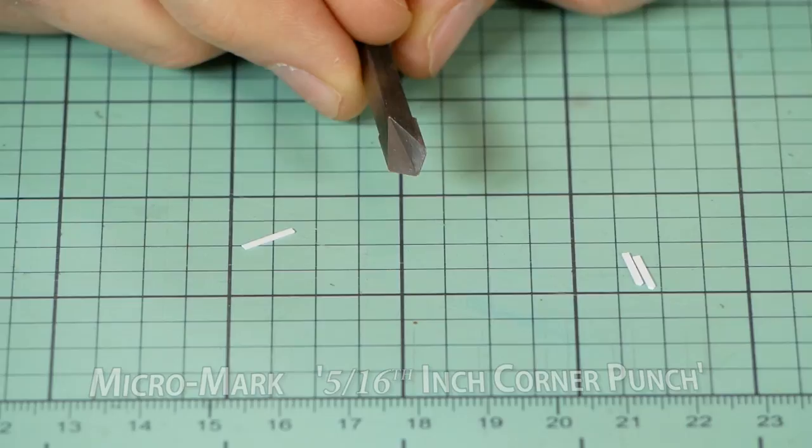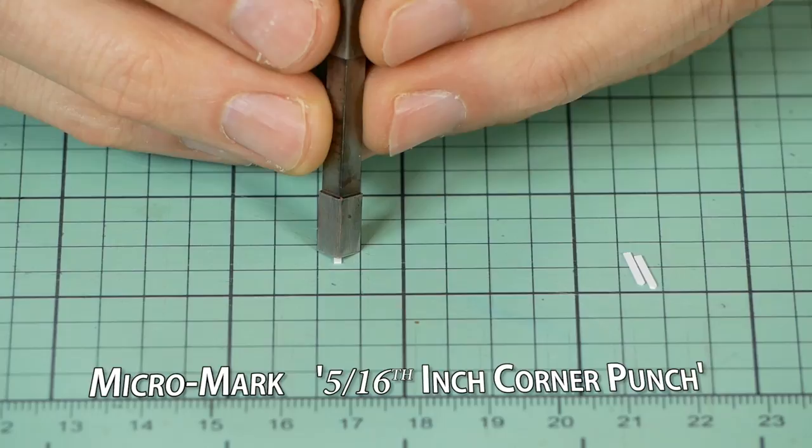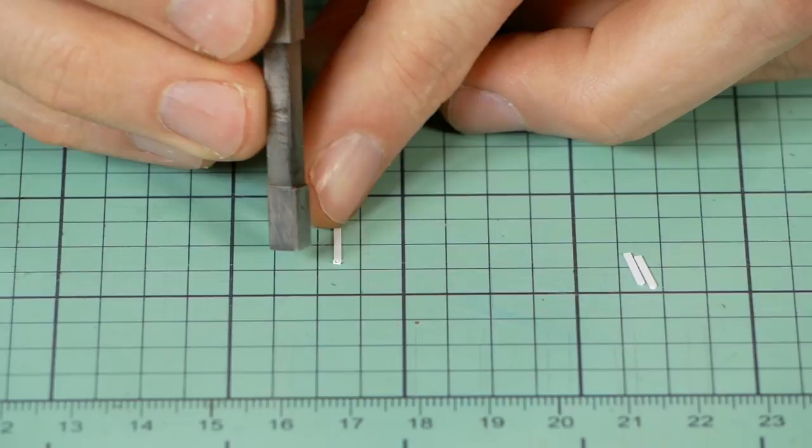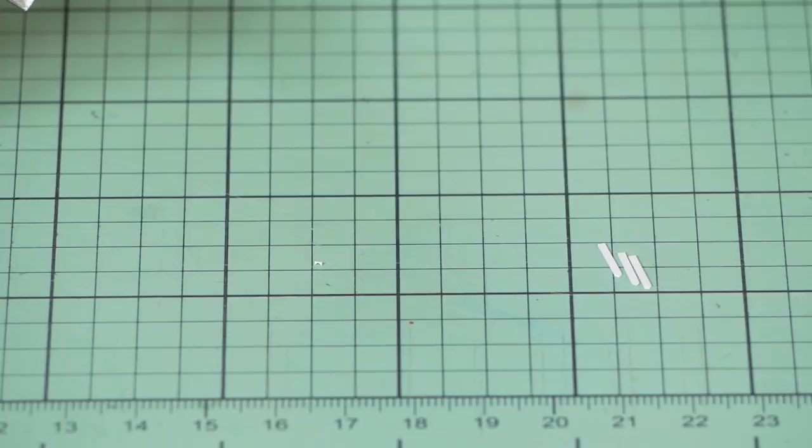The sides of the veranda have a picket fence like detail that I'm recreating with this corner punch also from Micromark. It's great for cutting out windows in styrene however I discovered it's also fantastic for making picket fence detail.